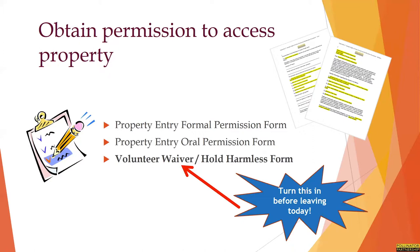Additionally, you'll need to sign a hold harmless document or volunteer waiver and have one signed for each of the team members on your team. Your state coordinator will be keeping track of that. If you aren't sure if someone has turned theirs in, you can get in touch with your state coordinator to make sure everybody on your team has filled out their proper forms. We've also created permission forms that can be used when a site doesn't have a specific permit process that needs to be followed, and these can be found in the seed collection manual appendices, as well as the team lead toolkit.